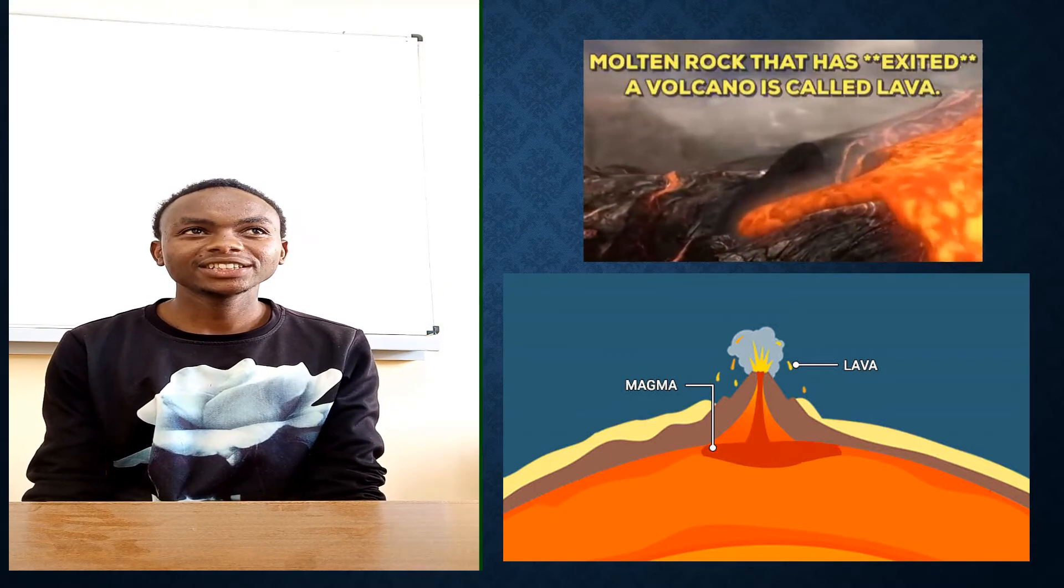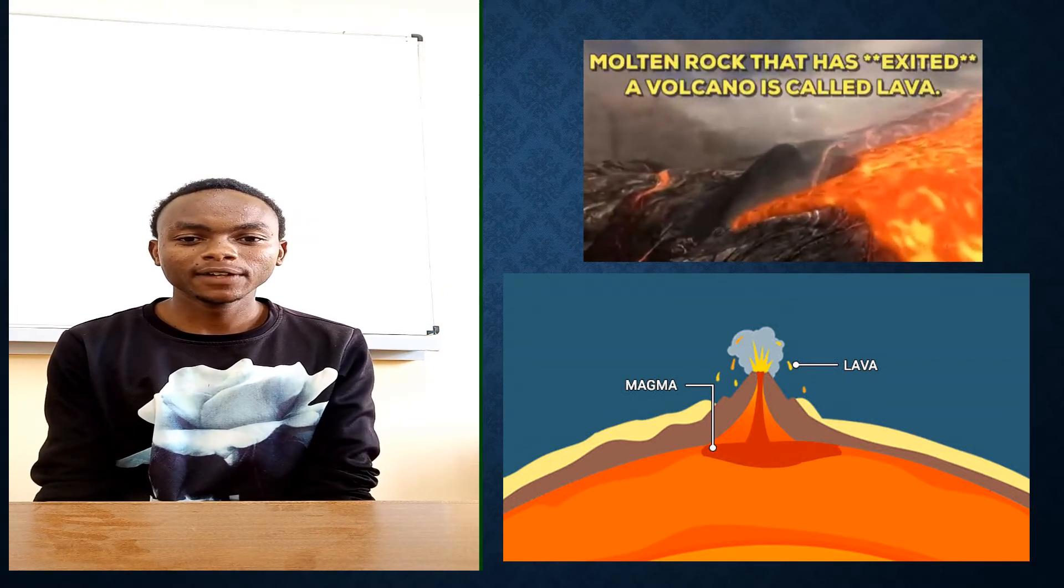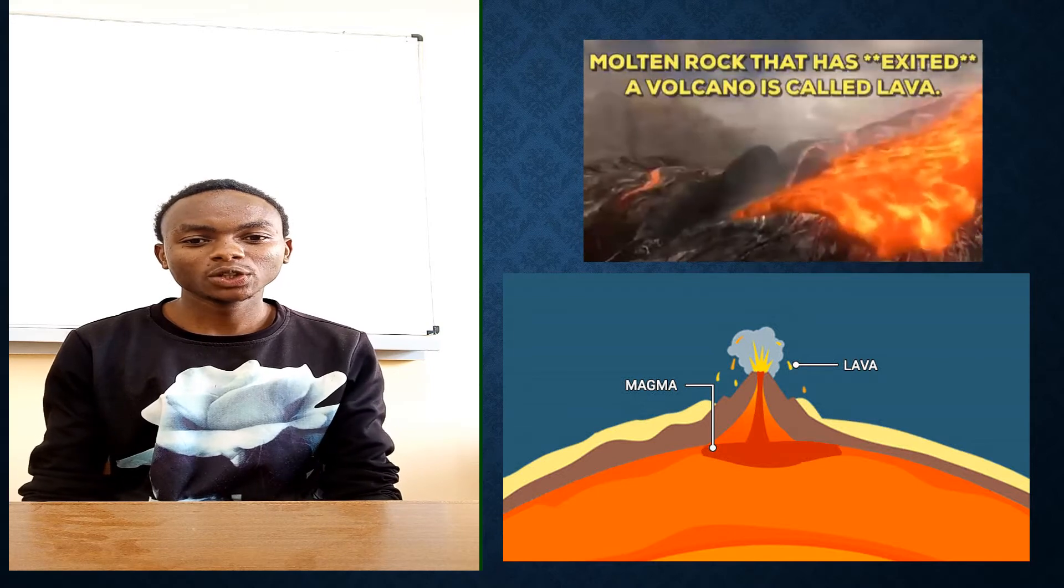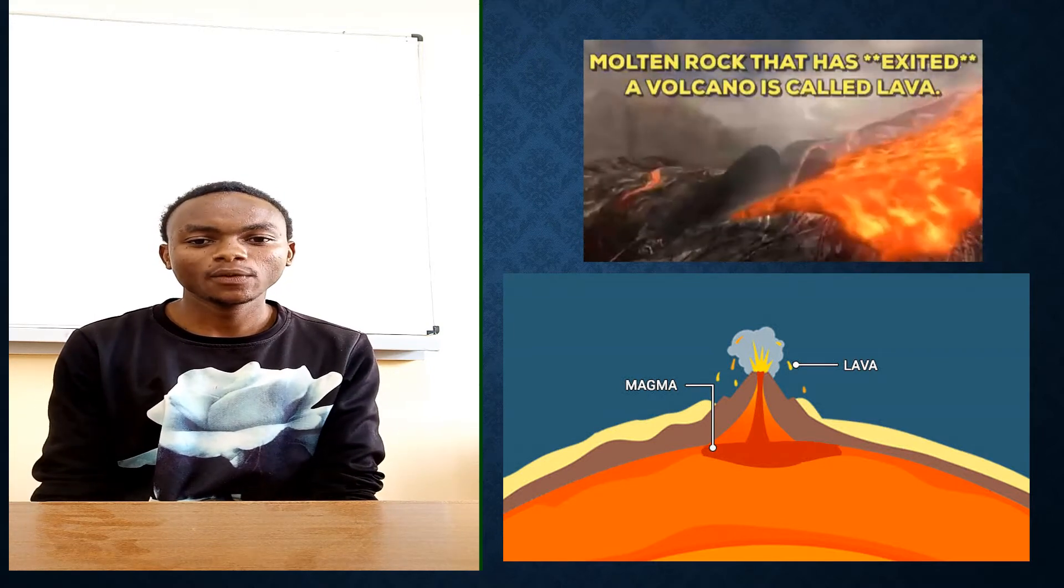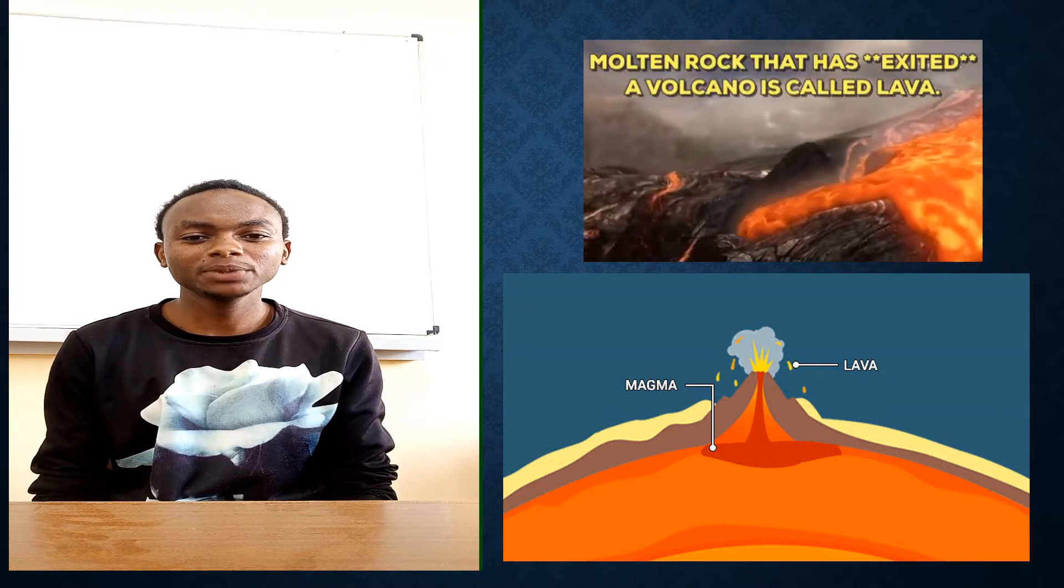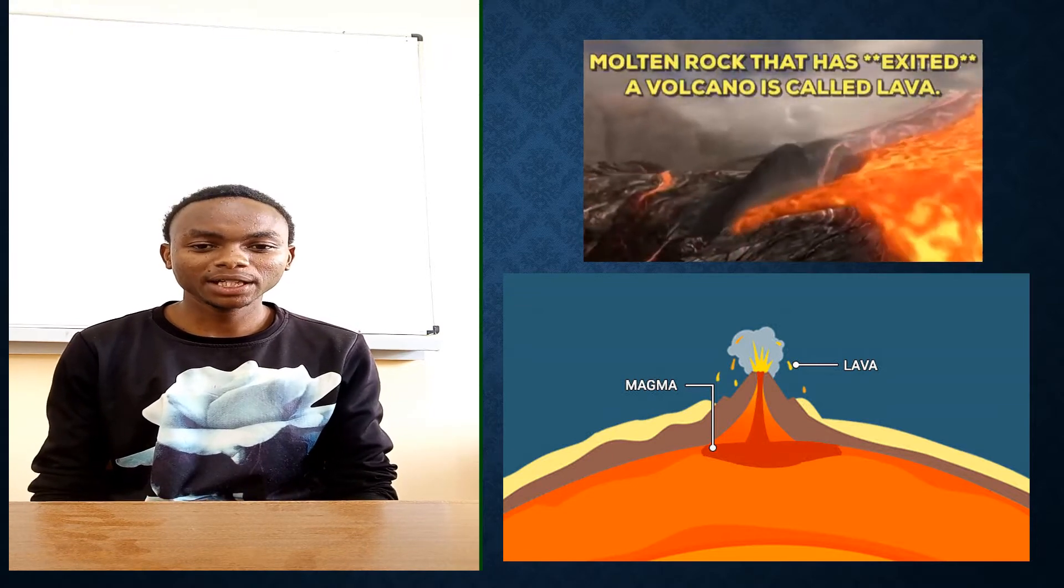The next item in our discussion is the difference between magma and lava. Magma is the molten rock materials that are in the earth's crust. When the molten rock material spills out of the earth's surface, they become lava.